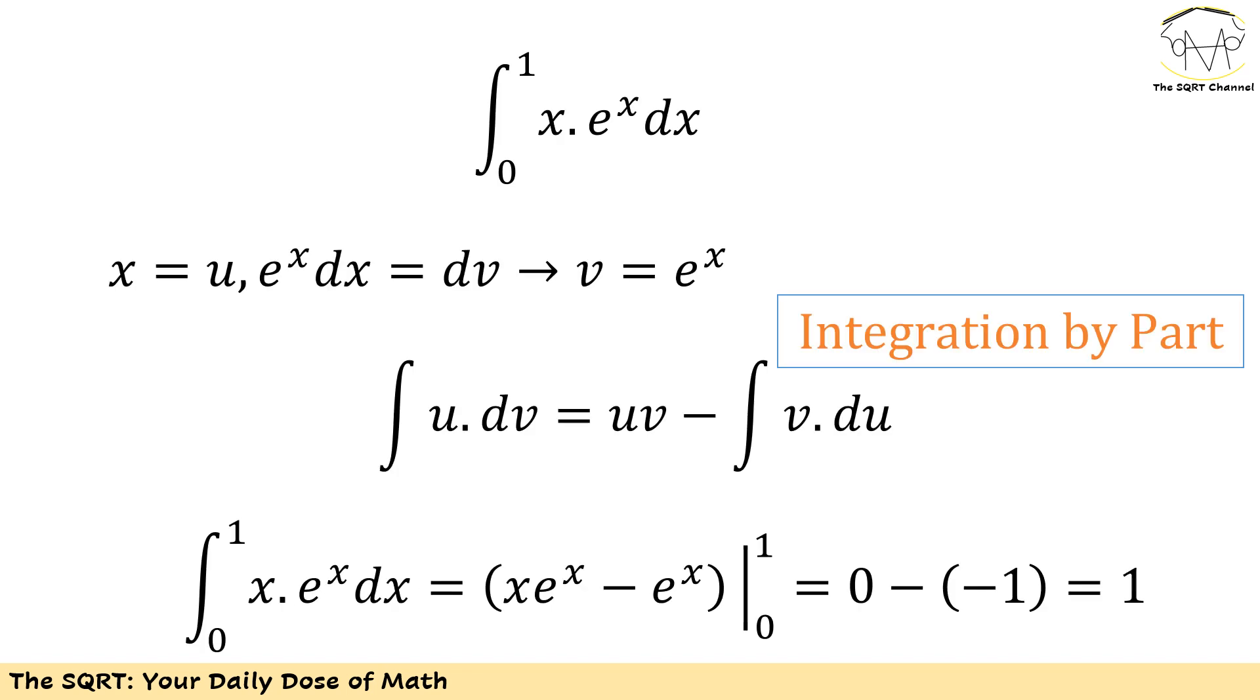To find the integral of x e to the power of x dx from 0 to 1, I'm going to use integration by parts. Remember, integral of u dv can be calculated as uv minus the integral of v du. Here I'm going to use u for x and e to the power of x dx as dv. If dv is defined as such, I can say that v is going to be e to the power of x.